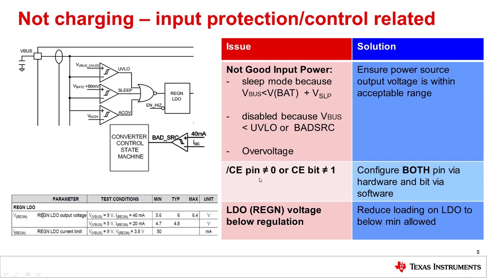The second issue is that your CE pin may not be equal to 0, or your CE bit may not be equal to 1. You want to make sure to configure both the pin via hardware and the bit via software so that they are in their correct states to enable charging. Lastly, you may also have your LDO or REGN voltage below regulation. For example, if your input voltage is 9 volts, your LDO voltage should be between 5.6 and 6.4 volts; with 5 volts input, it should be between 4.7 and 4.8 volts. The IREGN is 40 milliamps for 9 volts and 20 milliamps for 5 volts. If you are pulling more than those limits from the LDO, the LDO voltage will drop and will not be able to switch the converters. The solution is to reduce the loading on the LDO to below the minimum allowed.